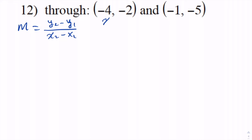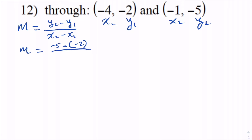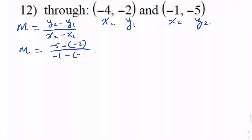We're going to label the first point x1, y1 and the second point x2, y2. Then we'll put the points into the formula: m is equal to negative 5 minus negative 2, and that's going to be divided by negative 1 minus negative 4.